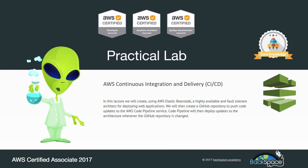This AWS CodePipeline that we create will pick up those changes in the GitHub repository and automatically deploy them to our Elastic Beanstalk environment. That is a great straight-through, continuous process for our developers to go from creating their code, putting it out, testing it, and then deploying it automatically to our production environment.